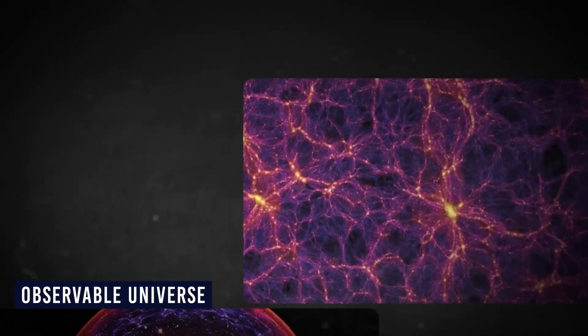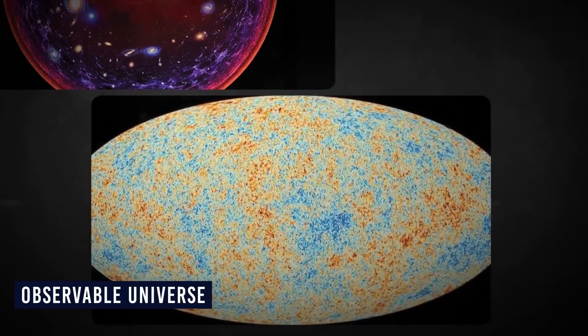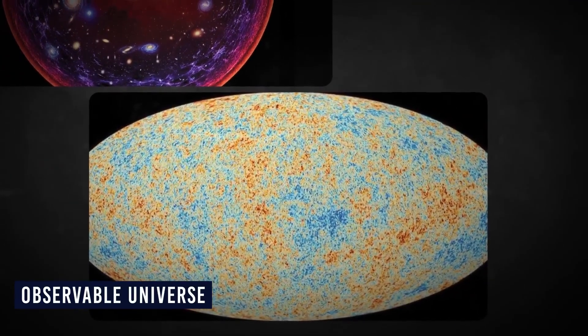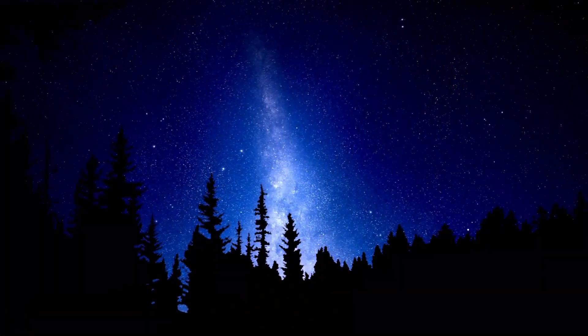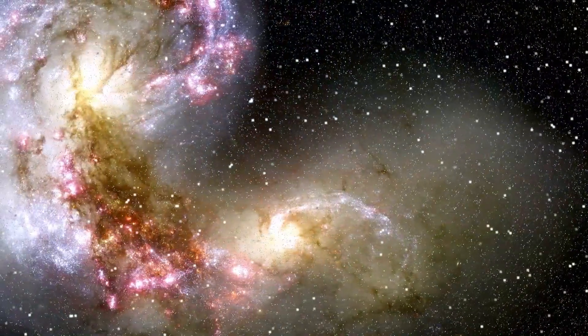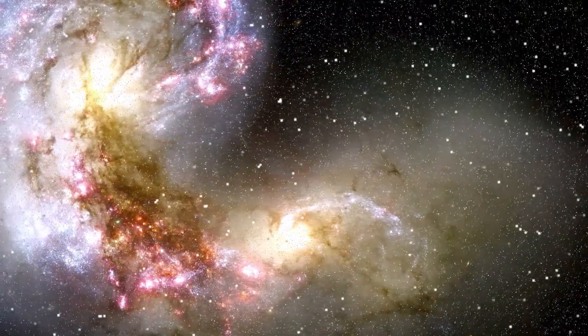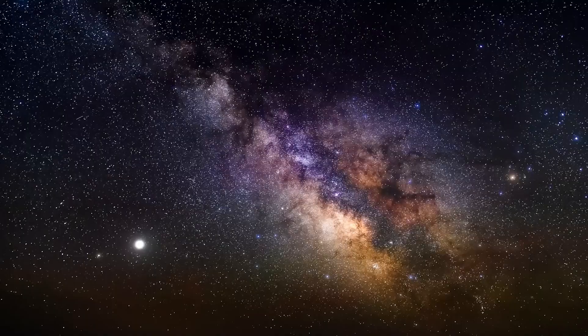You may wonder why can't we see the entire universe? There are two factors that explain this. The first reason is that light takes time to travel through space. When we look at distant objects in the universe, we're actually observing them as they were in the past. The farther away an object is, the longer its light has taken to reach us. By observing distant galaxies, we're essentially peering back in time, unraveling the history of our cosmos.